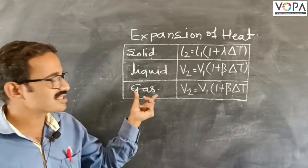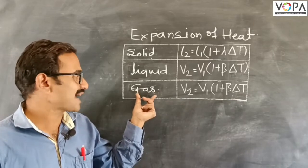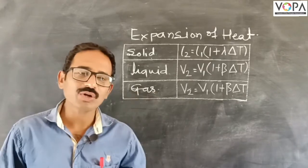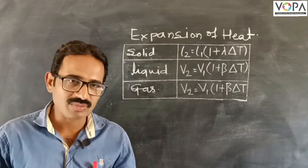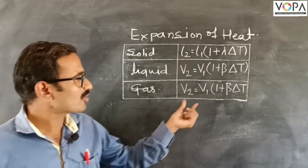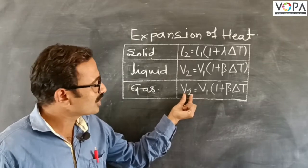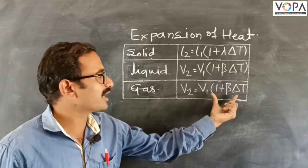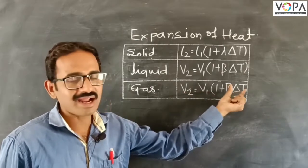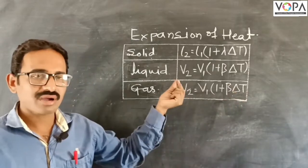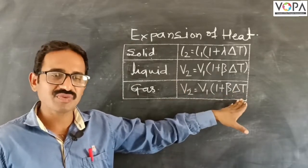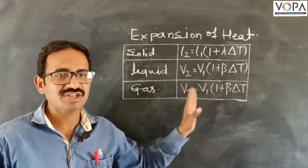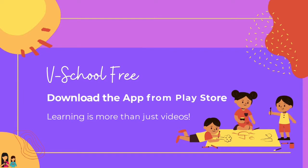Now the last one is the expansion of gas. If we apply heat to the gas molecules, then their volume also increases. Therefore, the formula will be V2 equal to V1 in bracket 1 plus beta times delta t, where beta is a constant and delta t is the difference between final temperature and initial temperature. This is the formula for expansion of gas.